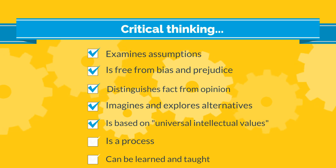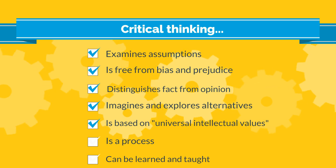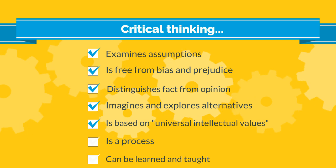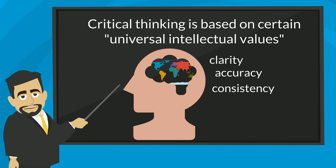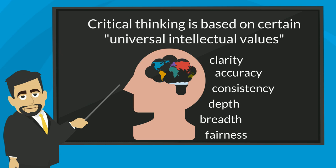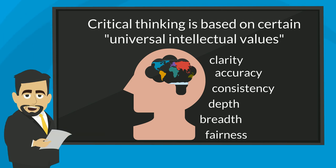5. Critical thinking is based on certain universal intellectual values. Clarity: we must think clearly. Accuracy: we must not base our thinking on incorrect information. Consistency: if we apply a rule to one context, we must apply that rule to all similar contexts. Depth: considering only surface information is not enough — we must consider a wide range of information. Fairness: we need to be fair. All of these require careful thinking, time, and a reduction of bias.